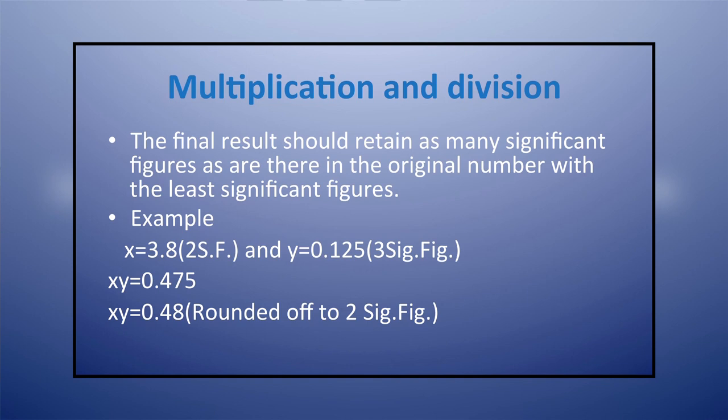In case of multiplication and division, the final result should retain as many significant figures as are there in the original number with the least significant figures. For example, multiplying x = 3.8 and y = 0.125: x has 2 significant figures and y has 3 significant figures. So the least number of significant figures is 2, and the result will contain 2 significant figures.